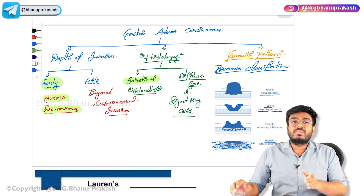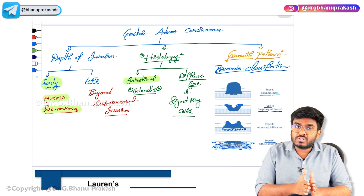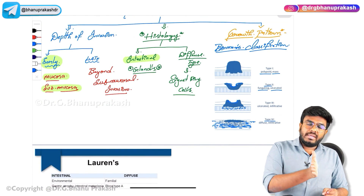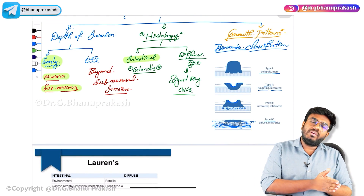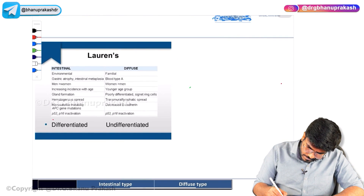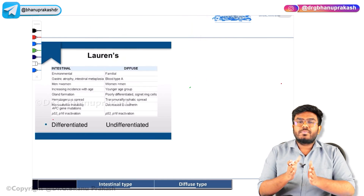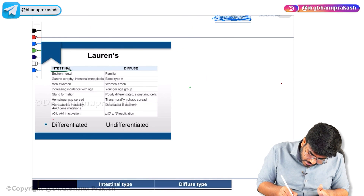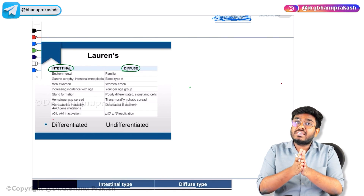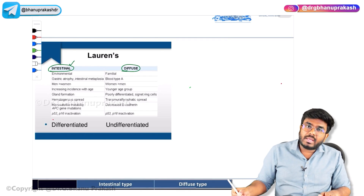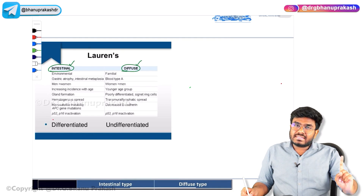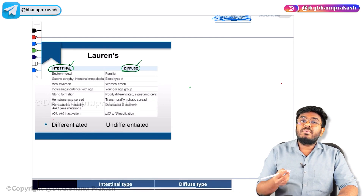Borrmann's classification is based on growth pattern — not histological. According to the histological classification — called the Lauren classification — gastric adenocarcinoma is divided into intestinal type and diffuse type. Based on depth of invasion, it is divided into early type or late type. In early type, mucosal and submucosal layers are involved; in late type, beyond submucosal involvement.